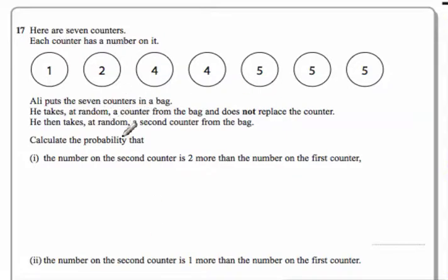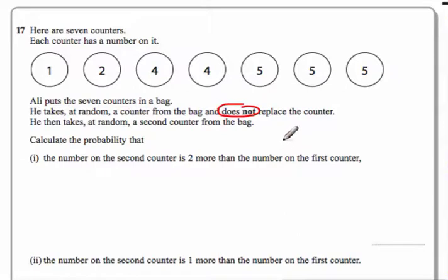He takes at random a counter from the bag and does not replace the counter. So straight away we're talking about conditional probability here — in other words, the probability of something happening depends on something else happening.